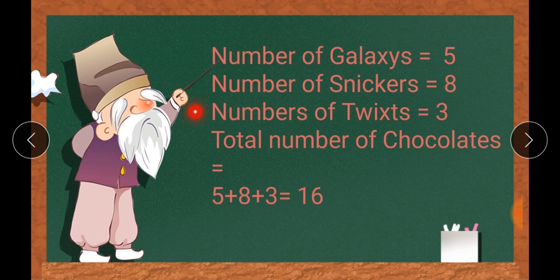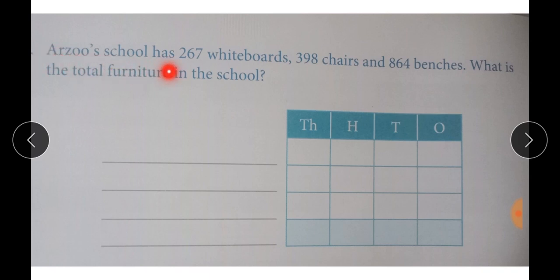If anyone looks at this answer, it is very clear that there are 5 galaxy chocolates, 8 snickers, and 3 twix. Then let's move to another example from your textbook. The question says: a school has 267 whiteboards, 398 chairs, and 864 benches. What is the total furniture in the school? We need to find the total furniture. First, we have to draw a place value table to add the numbers we already learned in our previous classes.